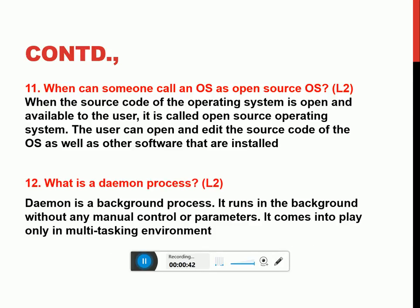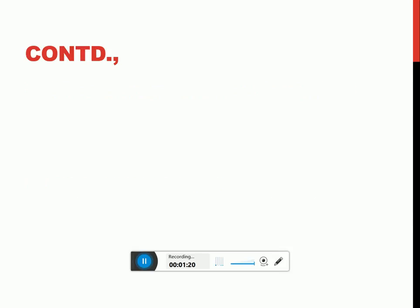What is a daemon process? A daemon process is something which can be referred to as a background process. It will automatically come into picture, run itself, do the necessary work assigned to it, and leave — it will not require any manual intervention. For example, every day an IT company may want to know how many users are logged into their system, so they can run a daemon process in the background without intervening in the employees' regular work and collect the details.